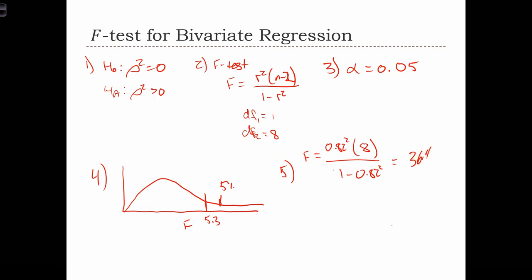So that's going to place our F test way over here in the tail of the distribution. 36.4, it's in the zone of rejection. So we have to reject the null.